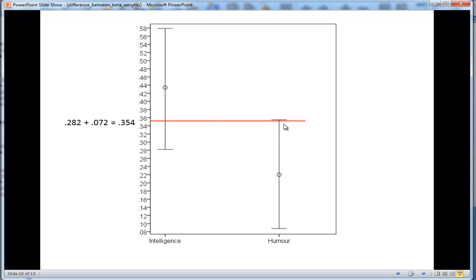We can actually see that the confidence interval for the humor point estimate is actually exceeding the halfway point, the 50% point.